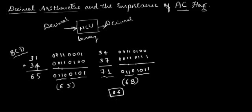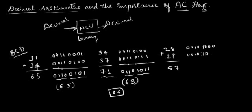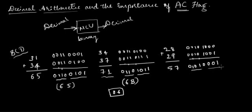Let me try one more example. Say I want to add 28 with 29 — I'm supposed to get 57. The BCD equivalent of 28 is 0010 1000 and of 29 is 0010 1001. When I add these two, working through the binary addition, I get a carry from the lower nibble to the higher nibble, and the result comes out to 0101 0001, which is equivalent to 51.